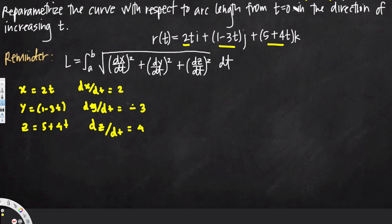Now let's plug these into the arc length equation. The question says the curve goes from t = 0 in the direction of increasing t, so we put 0 as the lower limit and t as the upper limit. For example, if the arc length started from t = 1 in the direction of decreasing t, we'd put 1 as the lower limit and negative t as the upper limit.